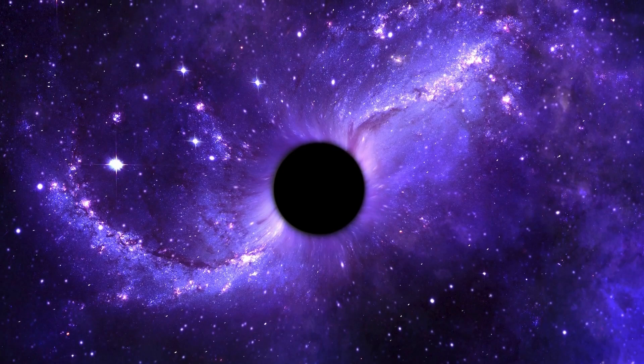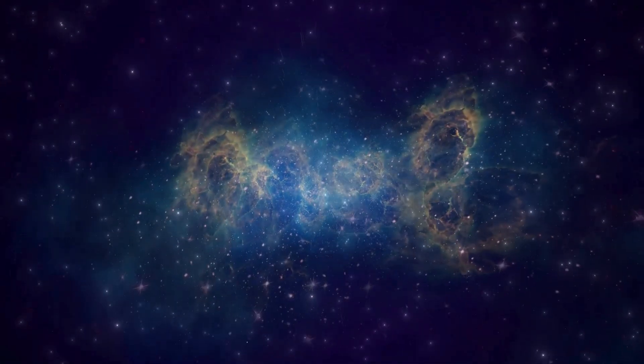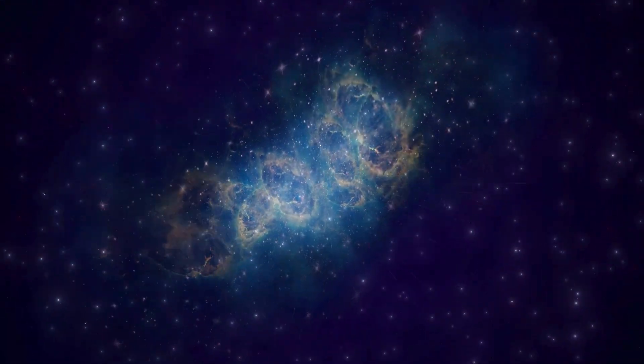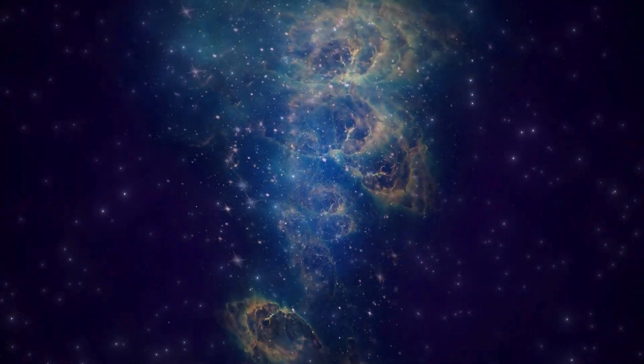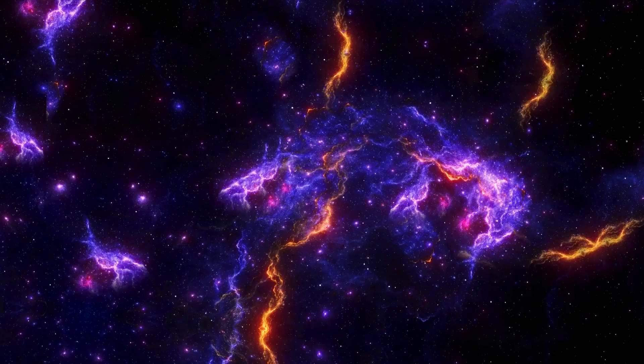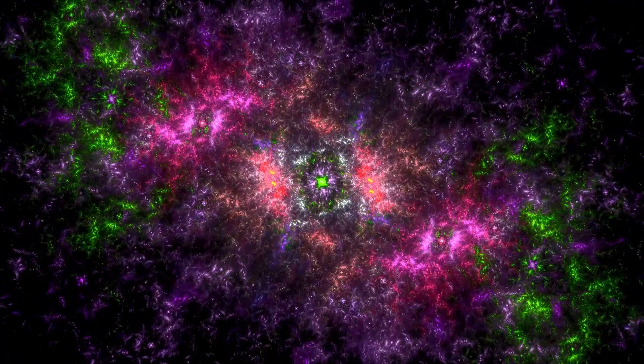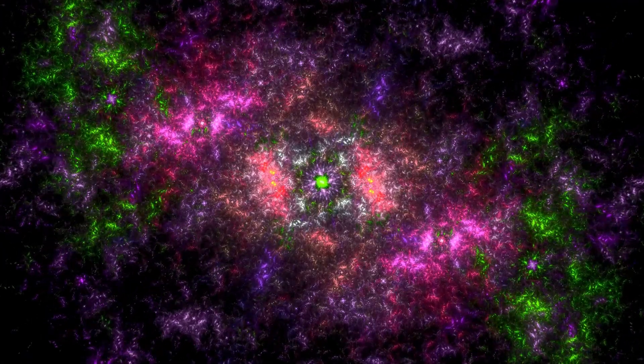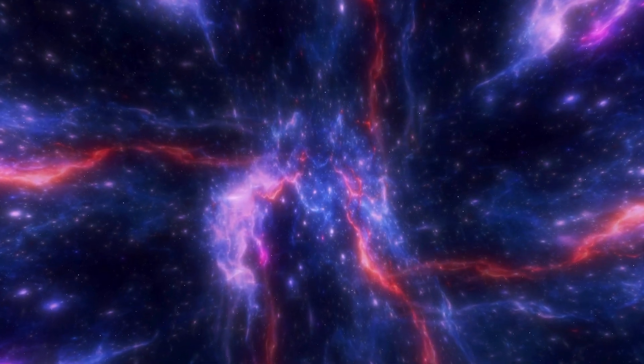This remarkable size not only showcases Betelgeuse's physical attributes but also highlights its stage in the stellar life cycle. As a red supergiant, Betelgeuse is in the twilight of its existence, marked by expansion and cooling after a life spent fusing hydrogen into helium in its core. Despite being relatively young in human terms, at around 8 to 8.5 million years old, Betelgeuse's current red supergiant phase is the result of millions of years of stellar evolution, transforming from a hot blue star to the red giant we see today.